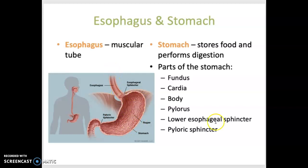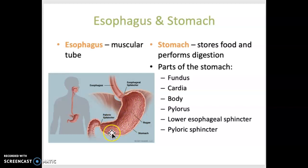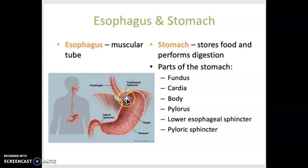The stomach is a muscular sac that stores food, and here mechanical and chemical digestion occur. There are a few parts to the stomach: the fundus is the upper portion, the body is the large central portion, and the pylorus is the lower portion. There are two sphincters that control the entrance and exit of the stomach. The lower esophageal sphincter is where the esophagus meets the stomach, and this prevents food from regurgitating back up into the esophagus.